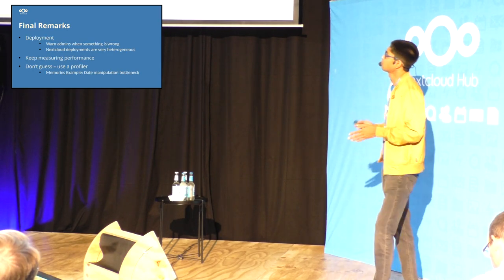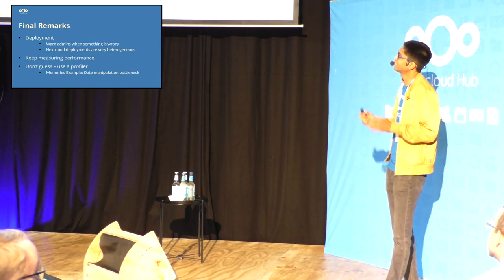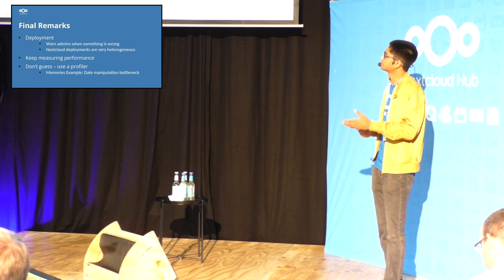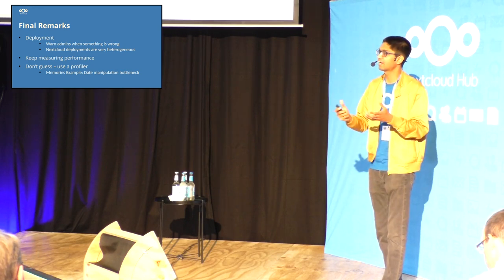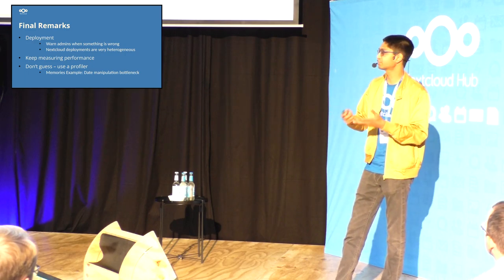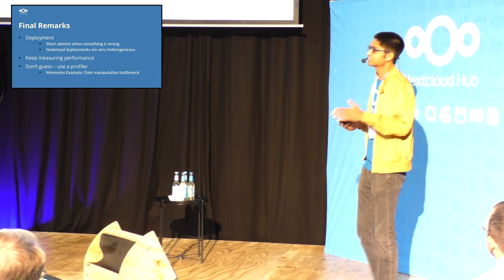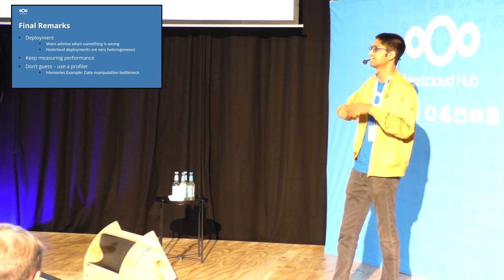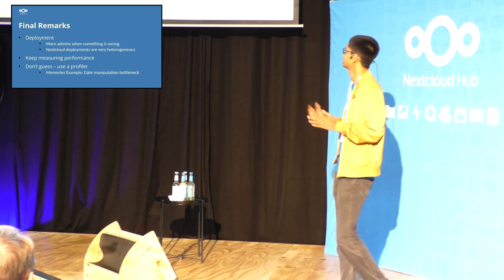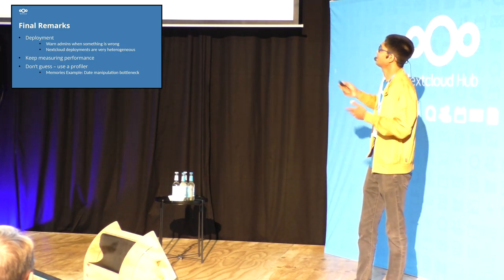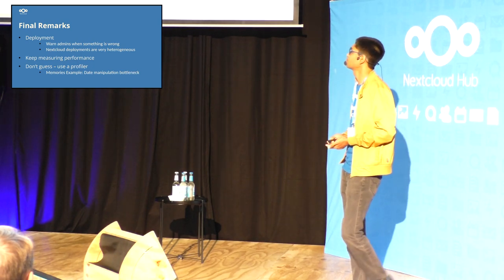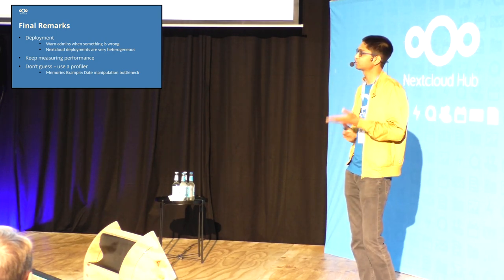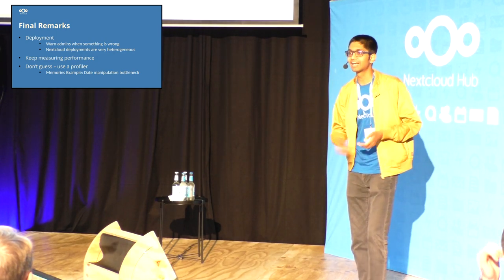Finally, this was a hard-earned lesson: deployment is just as important as the other three. That involves warning admins when the configuration is not right or when something is missing that keeps your application from being fast. Nextcloud deployments are very heterogeneous — you'll find things on Linux, FreeBSD, in Docker, without Docker, all different versions, and so on. And keep measuring performance if you're trying to build a high-performance app. Don't guess — use a profiler. Performance bottlenecks tend to be in places where you least expect them.